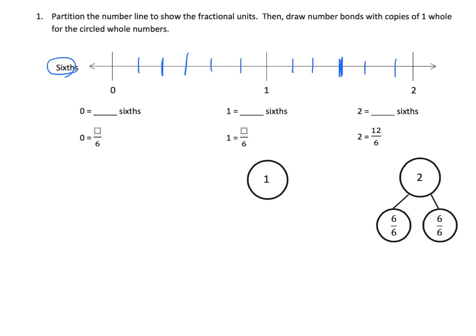So that's what we've done for the first part, partition the line to show the fractional units. Now it says draw number bonds with copies of one whole. So the idea is, first, right here, what's 0? Well 0 is 0 sixths, so right here we could put a 0. Now, over here, what is 1? Well 1 is, and we start here at 0, 1 sixth, 2 sixths, 3 sixths, 4 sixths, 5 sixths, 6 sixths. So 1 whole is equal to 6 sixths, which means we would put a 6 right there. So 1 whole is equal to 6 sixths. Now, what they want us to do down here in the number bond is just say that 1 whole is equal to 6 sixths.